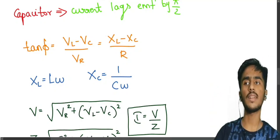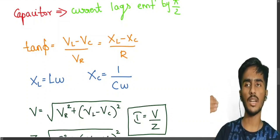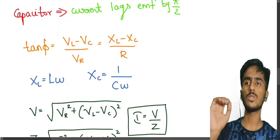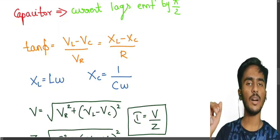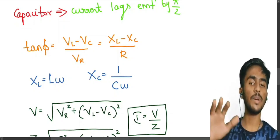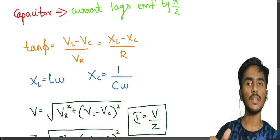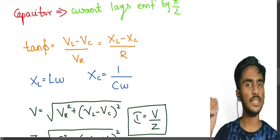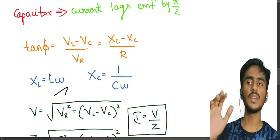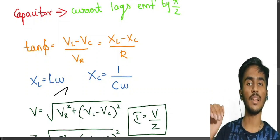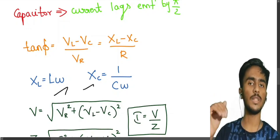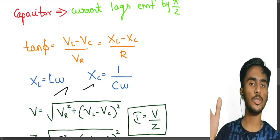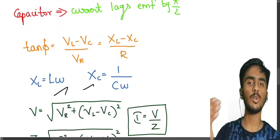The phase difference formula is: tan φ equals (VL minus VC) divided by VR, or equivalently XL minus XC divided by R. Here R is resistance, XL is inductive reactance, and XC is capacitive reactance. XL equals L·ω (directly proportional to ω), and XC equals 1 divided by C·ω (inversely proportional to ω).